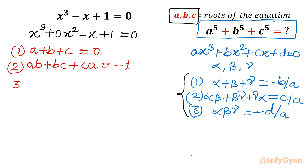Equation 3: product of roots A·B·C = -d/a = -1/1 = -1, since the constant term d is +1 with a negative sign applied.